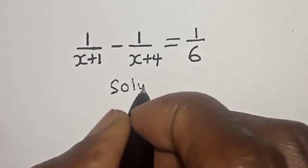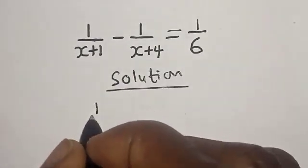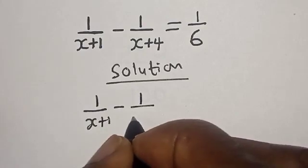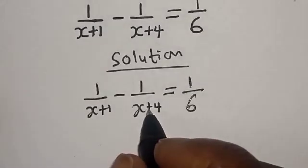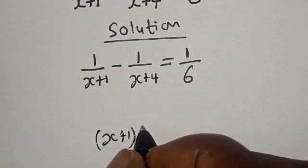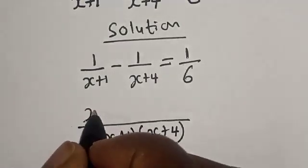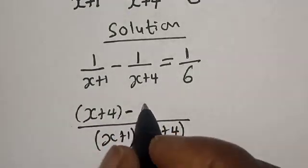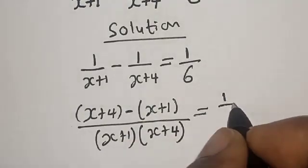Solution. We have the given equation: 1 divided by x plus 1, minus 1 divided by x plus 4, is equal to 1 divided by 6. Now let's find the LCD of the left-hand side. The LCD is (x plus 1) multiplied by (x plus 4). This gives us: (x plus 4) minus (x plus 1), all over the LCD, is equal to 1 over 6.